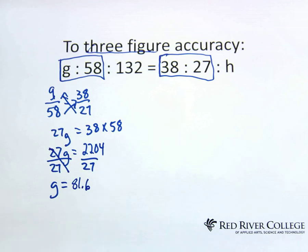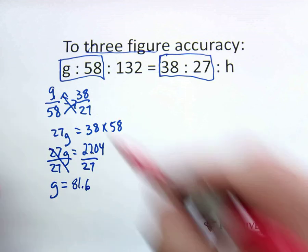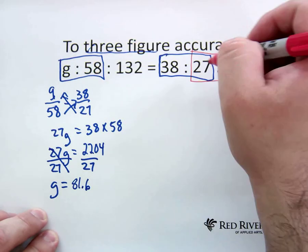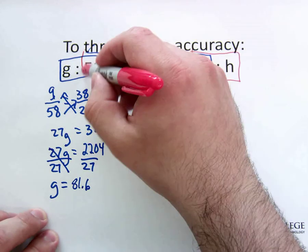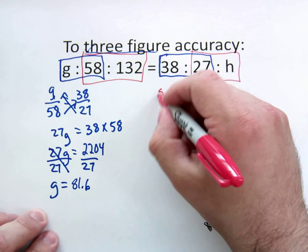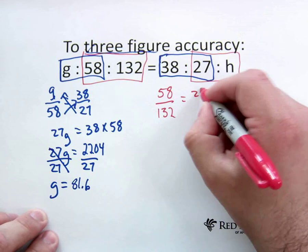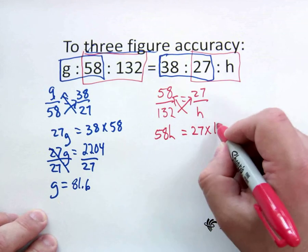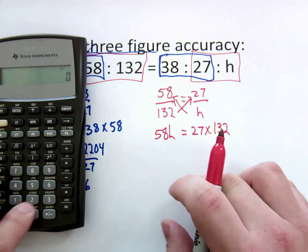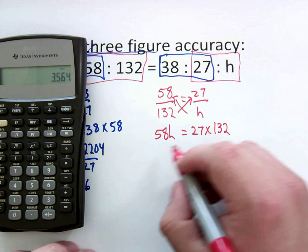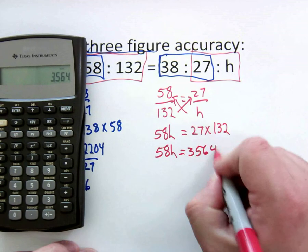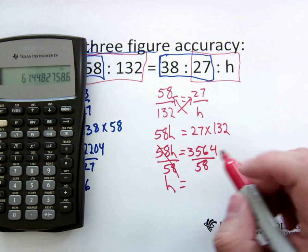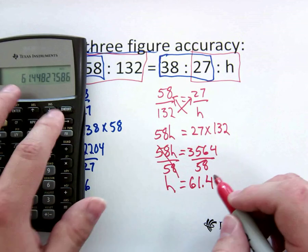Now for h, let me just get a different color marker here. For h, what we're going to do is since h is over here with the 27, put that in a box, and then the 58 would be to the 27, and the 132 would be to the h. So now we'll make a fraction. So 58 over 132 is equal to 27 over h. Multiply, multiply. So then we've got 58h is equal to 27 times 132. Bring in the calculator. So 27 times 132. So then we've got 58h is equal to 3,564. Divide by the 58. Leaving us to three-figure accuracy, 61.4. So then that is our h.